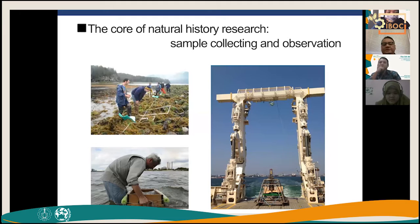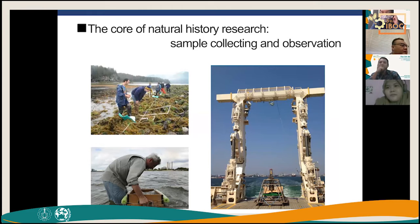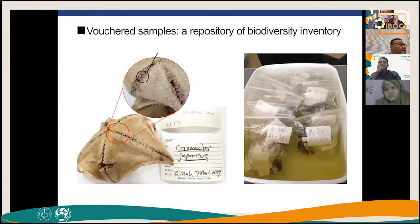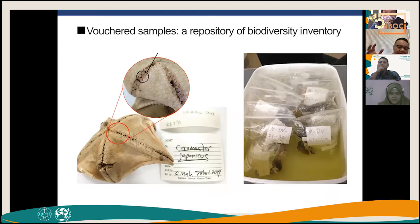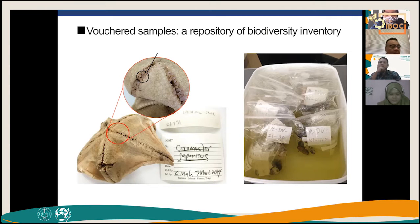The core of natural history research is fieldwork, sampling, sample collecting, and observation. The collected samples are then brought back to the lab, analyzed, vouchered, listed, and studied further.